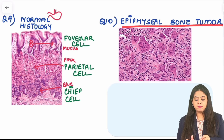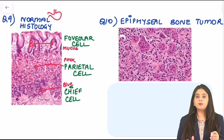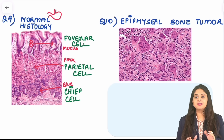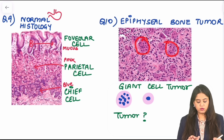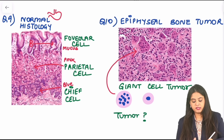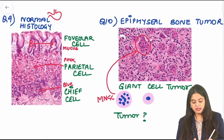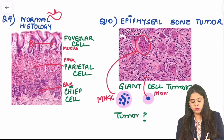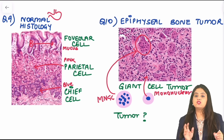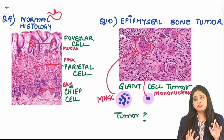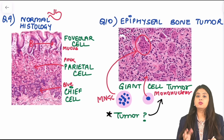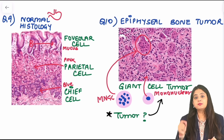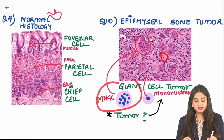Question 10 shows an epiphyseal bone tumor with many giant cells — this is a giant cell tumor. There are two cell types visible: multinucleated giant cells, and mononuclear cells with a single nucleus. An important exam point: it may seem like the giant cells are the tumor element, but that is wrong. The actual tumor element is the mononuclear cells — the cells with a single nucleus. The giant cells are just a reaction to the tumor.